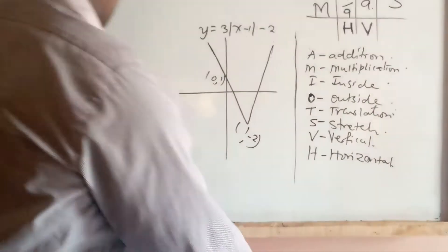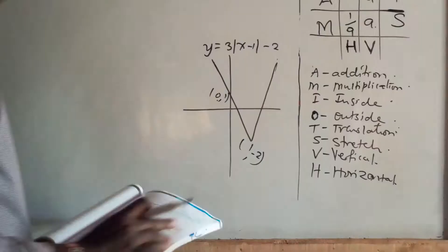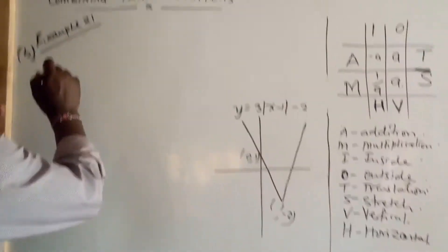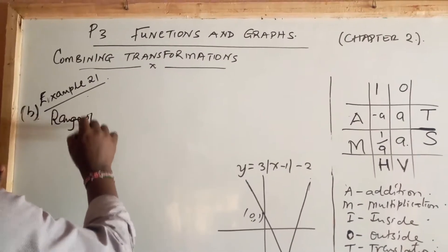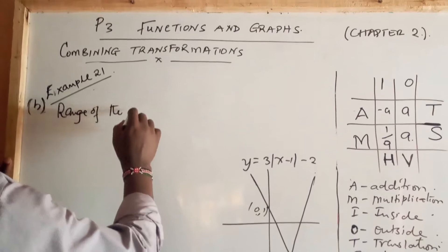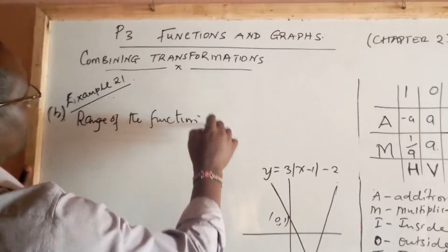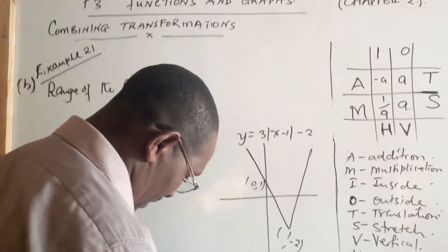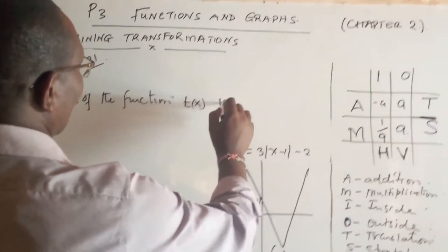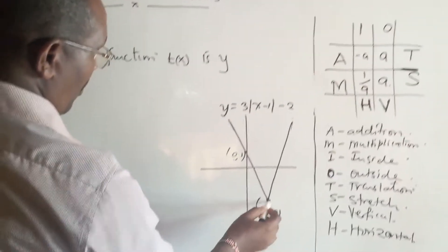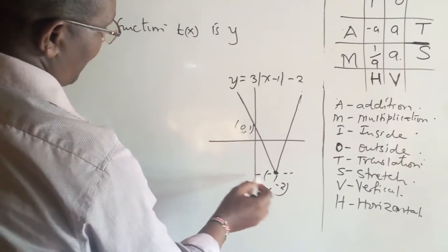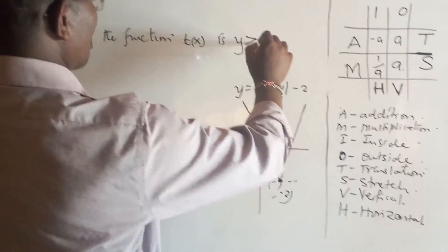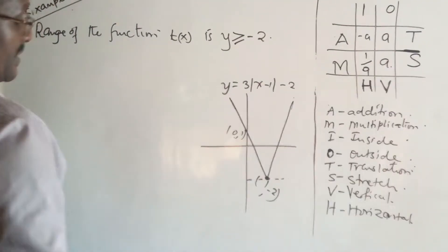So the range is now very easy, because you can already see it. The range of the function f(x) is y ≥ -2. You can see the least value of y is -2, it is greater than or equal to -2.